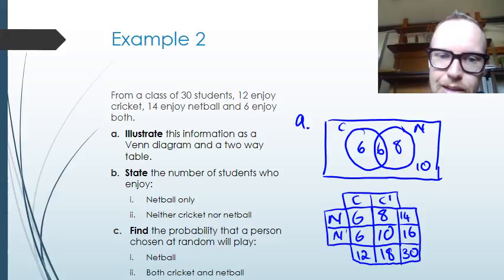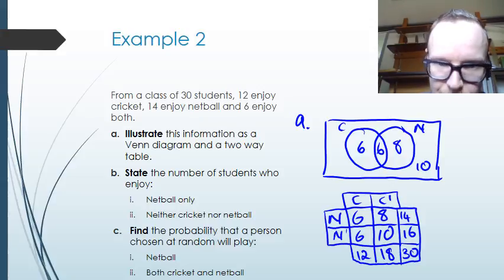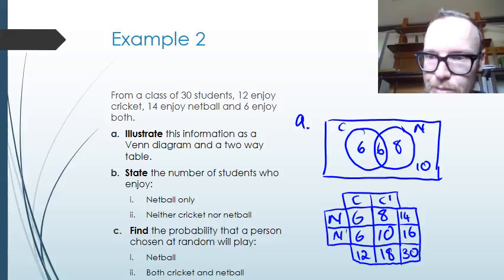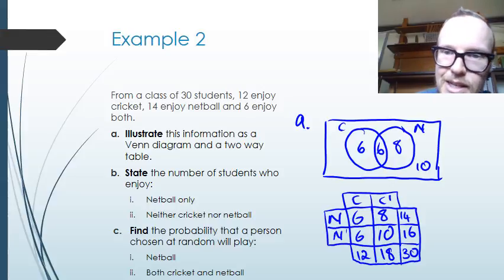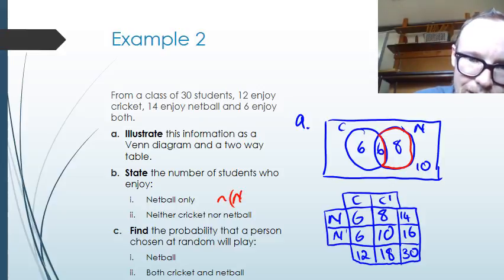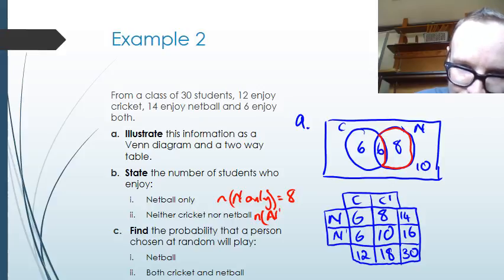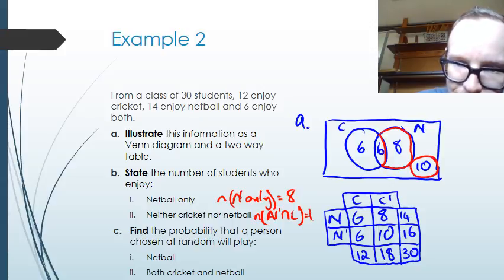We're asked to state the number of students who enjoy netball only, and neither cricket nor netball. Netball only — netball but not cricket — is 8 students. Neither cricket nor netball is the intersection of not-cricket and not-netball, which is 10.